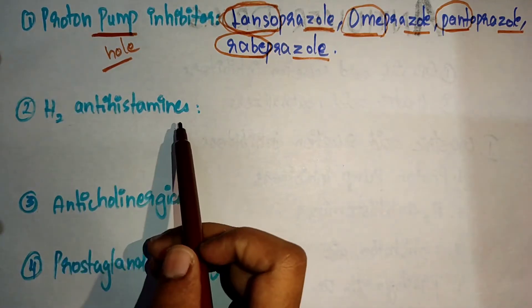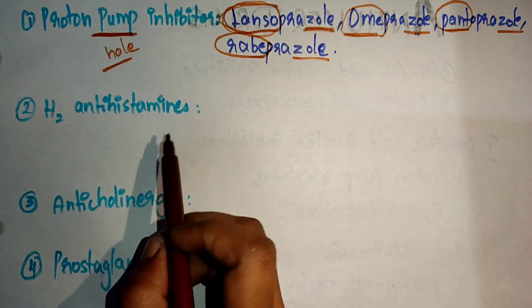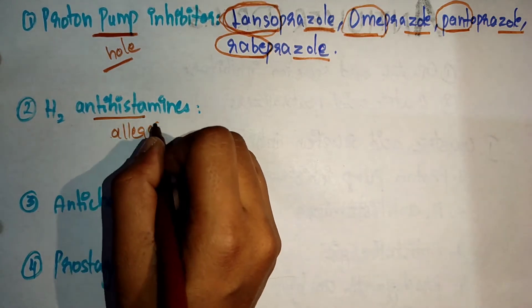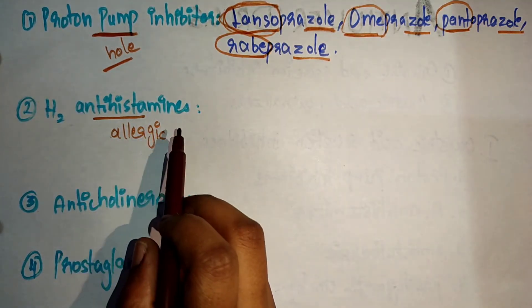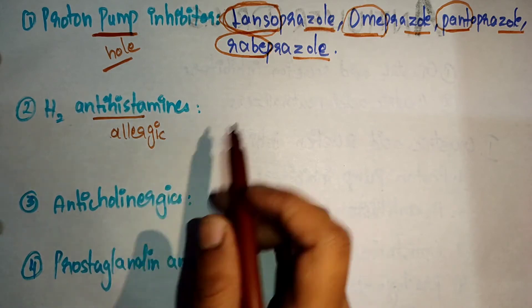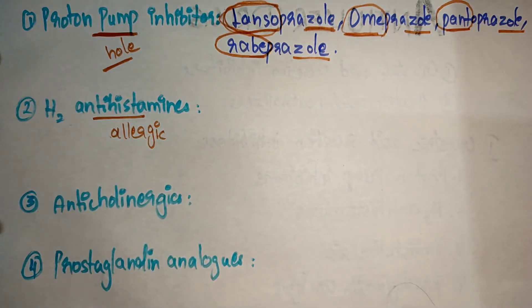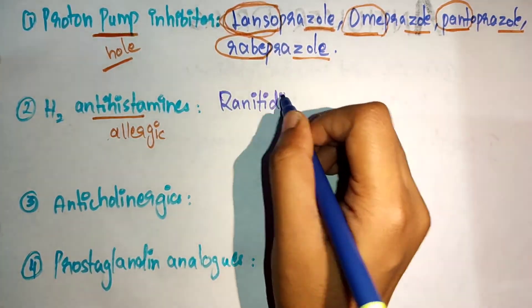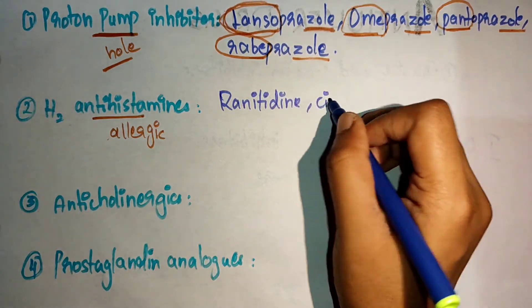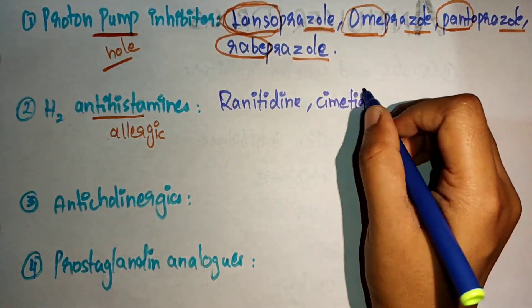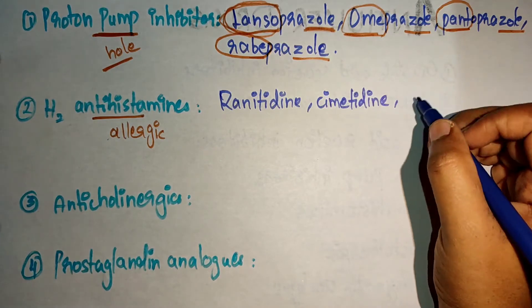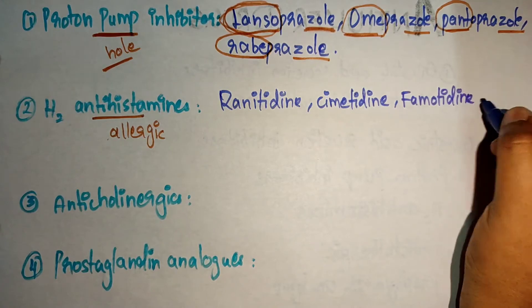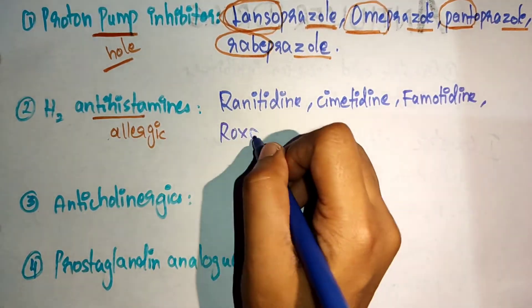Let's move on to the H2 receptor antihistamines. The drugs are: Ranitidine, Cimetidine, Famotidine, and Roxatidine.